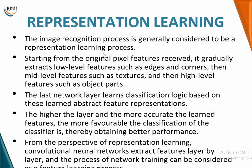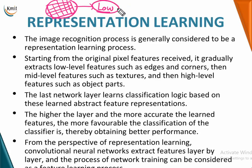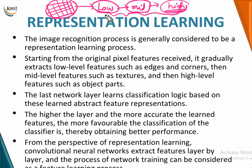Image recognition is essentially a representation learning process. Starting from the original pixel features of an image — a grid of pixels — you first extract low-level features like edges and corners, then mid-level features like texture, and finally high-level features like parts of an object.